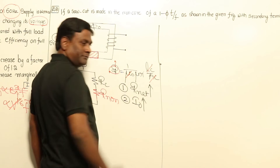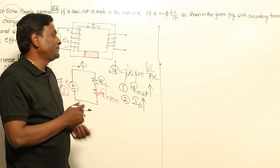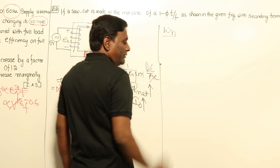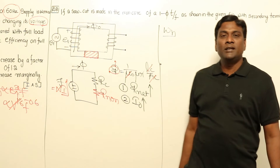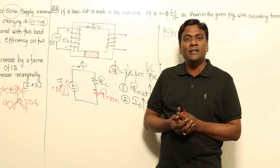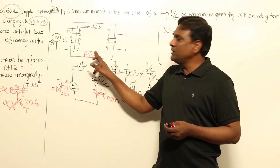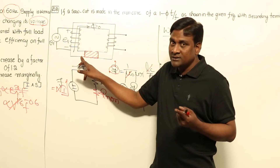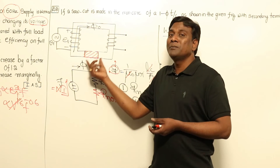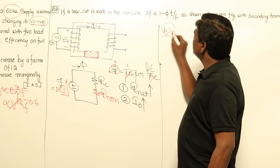Now let us think of hysteresis loss. Will it increase or decrease? Actually, hysteresis losses will decrease, because hysteresis losses occur only in magnetic material and not in non-magnetic material. At starting with completely magnetic material, hysteresis losses are present throughout. But if some part of the magnetic metal is replaced with non-magnetic metal, in the non-magnetic material section there will be no hysteresis loss. So hysteresis loss has to reduce — this is the third point.